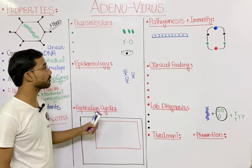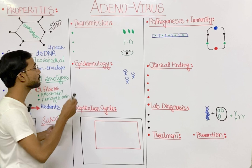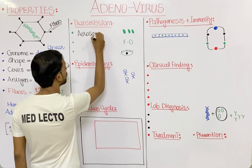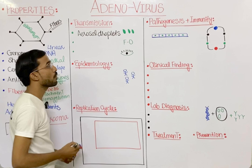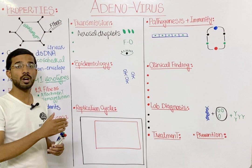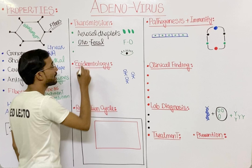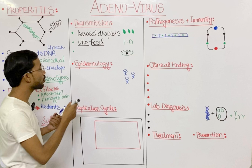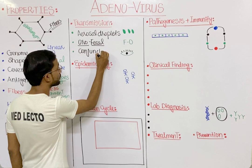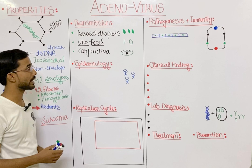If we discuss the transmission of adenovirus, the first route is aerosol droplet — these droplets are present in the air and transmit from one person to another. The second is the oro-fecal route, transmitting through feces to the mouth. The third is direct contact to the conjunctiva.